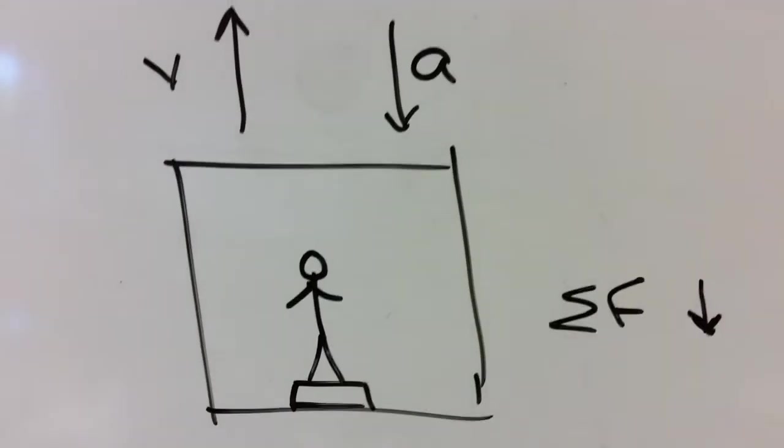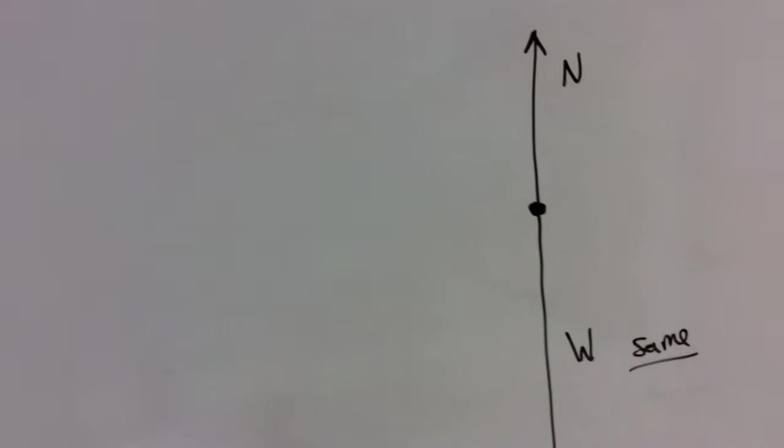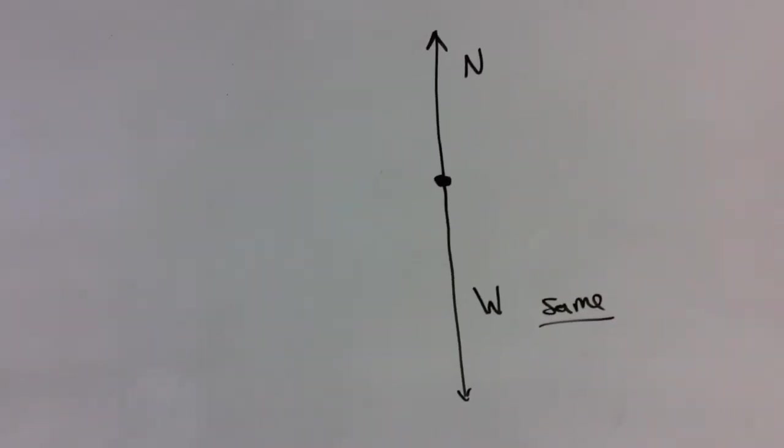So you get the net force down, which means that the down force, the weight, which is the same as it was before, is larger than the normal force up. So focus on the direction of acceleration and which force is going to be bigger.